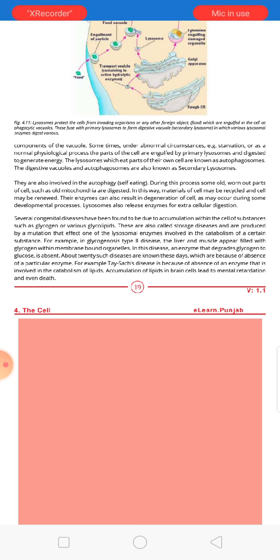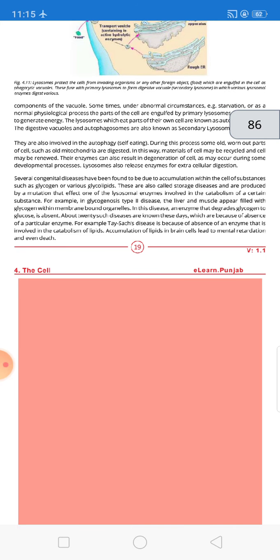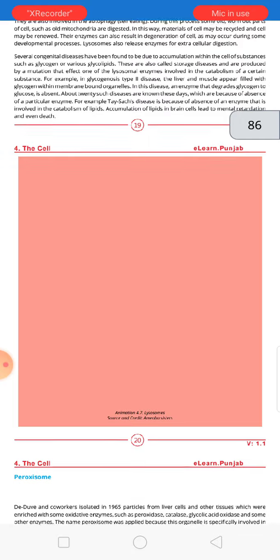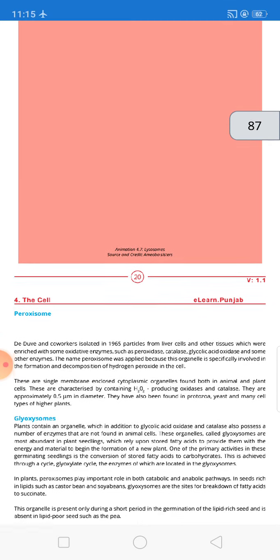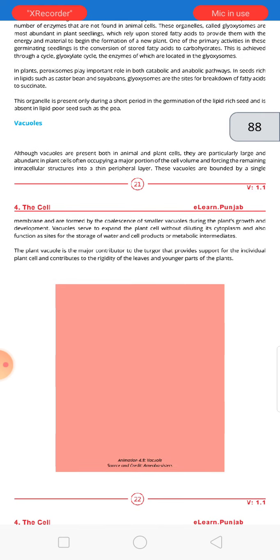About 20 such diseases are known today, caused by the absence of a particular enzyme. For example, Tay-Sachs disease is another such condition — an enzyme that normally catabolizes certain lipids is absent, resulting in accumulation of lipids. This disease can lead to mental retardation, and if there is excessive lipid accumulation, it can lead to death.